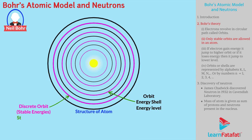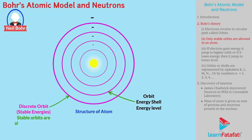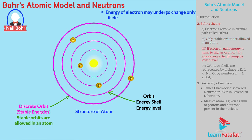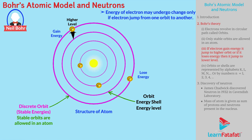Therefore, only stable orbits are allowed in an atom. Energy of an electron may undergo change only if electrons jump from one orbit to another. If an electron gains energy, it will jump to a higher orbit; or if it loses energy, it will jump to a lower level.